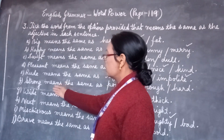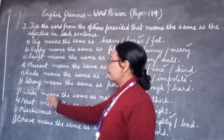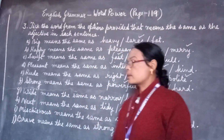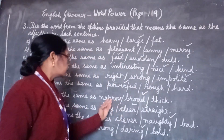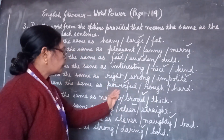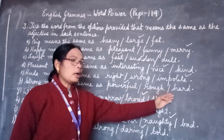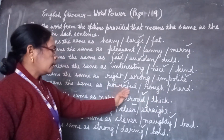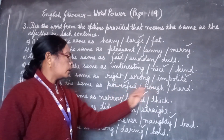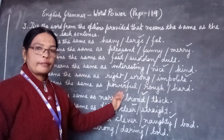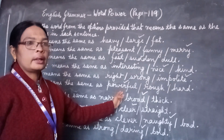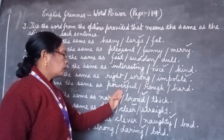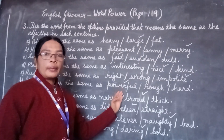Now come to number F. 'Strong' means the same as — the options are powerful, rough, and hard. The meaning of strong among these three words is powerful. So we will put a tick mark on powerful.